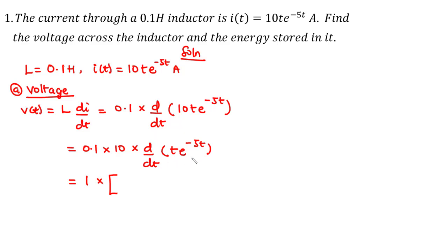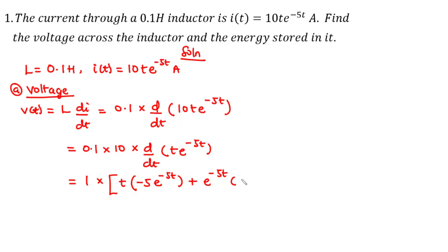We have the product of two functions: t and e^(−5t), so we differentiate using the product rule. First, we hold t and differentiate e^(−5t) with respect to t — the derivative of the exponent −5t is −5, so we get −5·e^(−5t). Then we hold e^(−5t) and multiply by the derivative of t, which is 1.